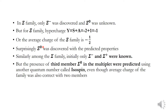Similarly, a prediction was made for the Sigma family. Initially Sigma-minus and Sigma-plus were known, but the presence of a third member Sigma-zero in the multiplet was predicted using another quantum number called isospin. Even though the average charge of the two known members was already zero — which would also hold with a third member — we could not predict the third member solely using average charge or hypercharge Y. Instead, isospin helped us predict the presence of Sigma-zero in the Sigma family.